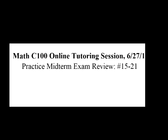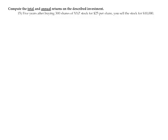Hi everyone. Welcome back to Math 100. Today I'll be revealing the Practice Midterm Exam Review, Problems 15 to 21. Number 15 states to compute the total and annual returns on the described investment. For five years after buying 300 shares of XYZ stock for $25 per share, you sell the stock for $10,000. We want to calculate the total and annual returns on this investment.